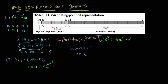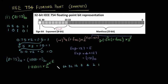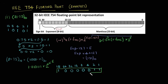So exponent equals 4 plus 127, which is 131 in base 10. We convert 131 to binary by writing the weights 1, 2, 4, 8, 16, 32, 64, 128. We put a 1 at the 128 position. 131 minus 128 is 3, so we also need 2 and 1. So 131 in binary is 10000011. This is our exponent value to be stored in the word.